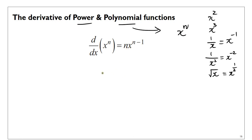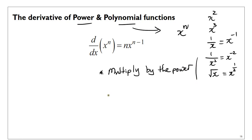So you're doing two things: you multiply by the power, and then you subtract 1 from the power. That's it. This formula is actually given to you for board exams on the formula sheet.